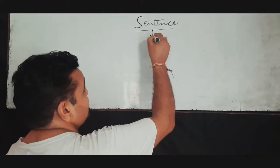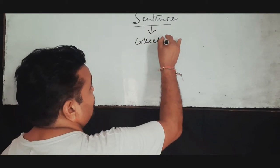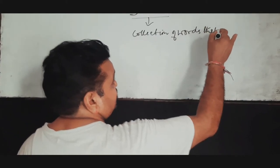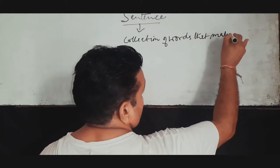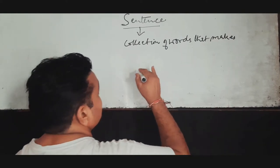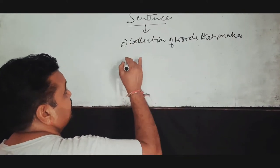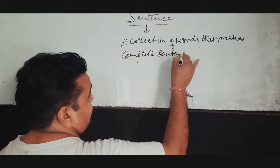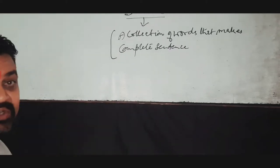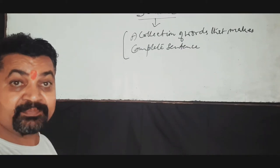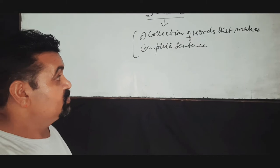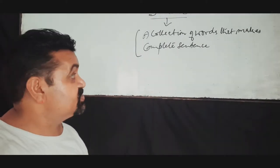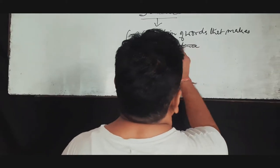A sentence is a collection of words that makes complete sense. A collection of words - words are the basic knowledge of sentence, but it must have some complete sense.